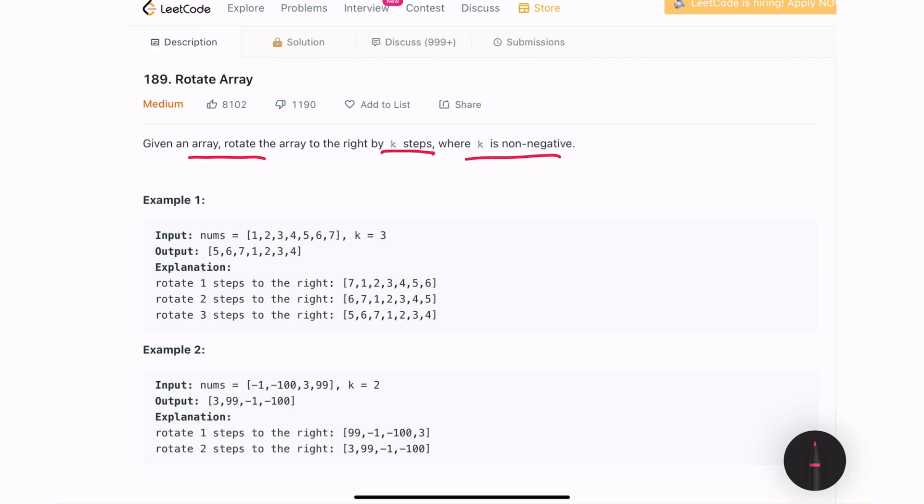If we look at example number 1, we are given an array nums and the k value is 3. So we need to return the output or modify the nums array which is given as an input and shift all the elements to the right by 3 spaces.